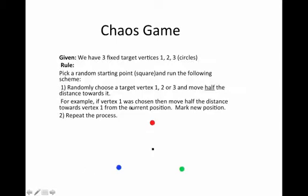So the game is as follows: imagine you have three colored circles that are your fixed targets—the red, blue, and green—and you randomly start any place you want. I have for this page here just starting from the center of this triangle, but you can start anywhere you want and you run the following scheme.